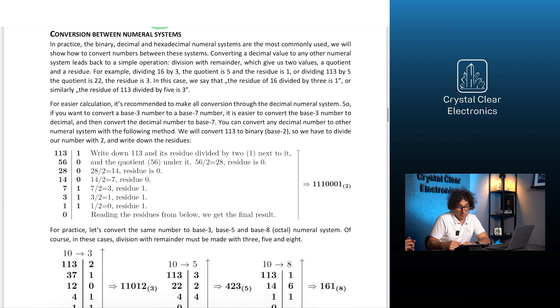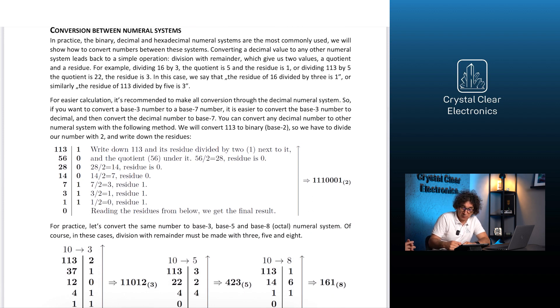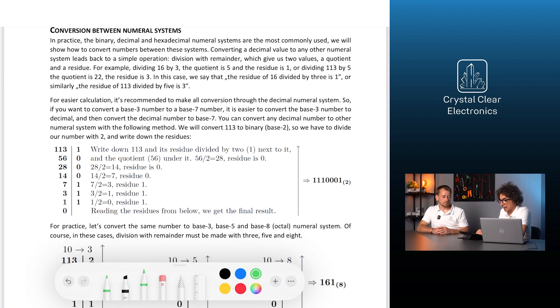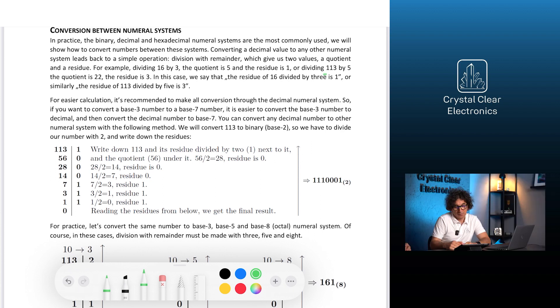Converting a decimal value to any other numeral system leads back to a simple operation, division with remainder, which gives us two values, a quotient and a residue. For example, dividing 16 by 3, the quotient is 5 and the residue is 1. We're dividing 113 by 5, the quotient is 22, the residue is 3.